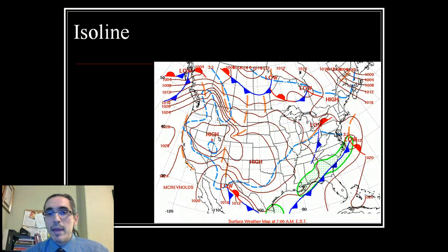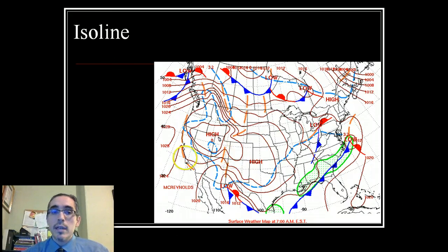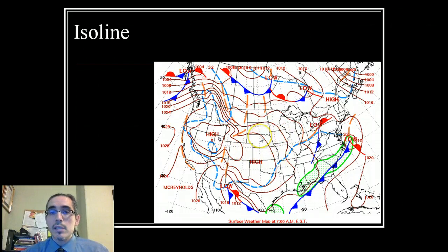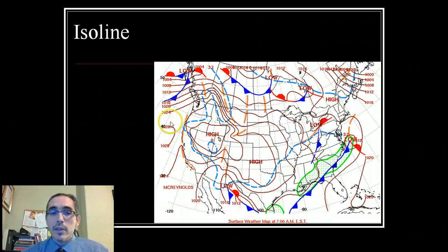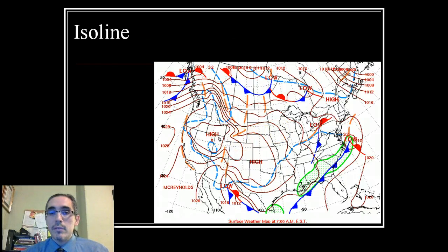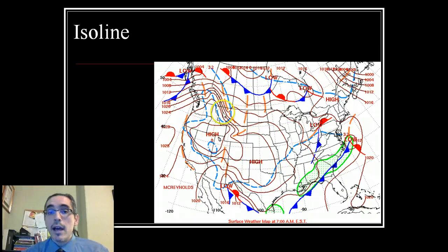Another type of thematic map you may have seen in weather reports on TV or online are weather charts. This one shows pressure differences across the continental U.S. and is known as an ISO line map. The lines connect points of equal air pressure, and the information is communicated by the distribution, shape, and values of those lines. Where pressure lines become concentrated, you get a strong pressure gradient and probably very high winds in that area.